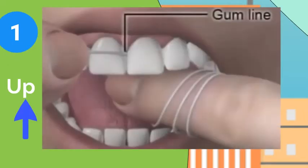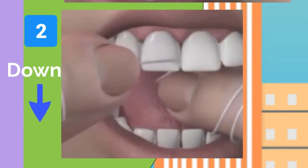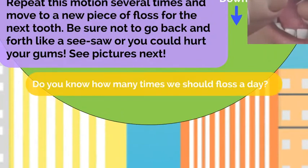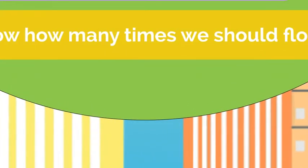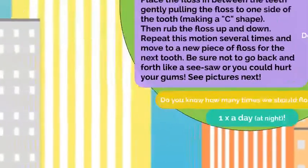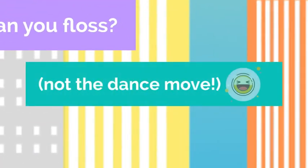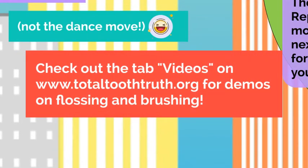Number one — up. Slide the floss, rubbing in an upward motion. Number two — down. Slide the floss downward, rubbing your tooth in a downward motion. Do you know how many times we should floss each day? This may be a little trickier — just one time a day, at night. That's the best time to floss. Can you floss? Not the dance move. Check out the tab videos on www.totaltoothtruth.org for demos on flossing and brushing.